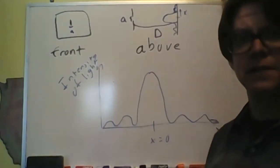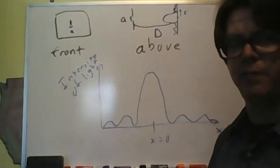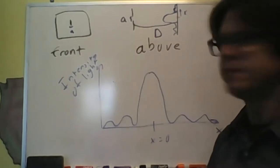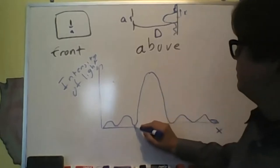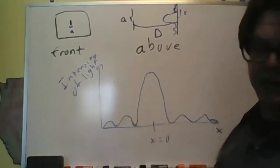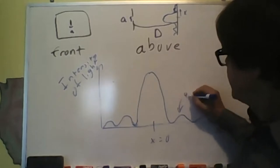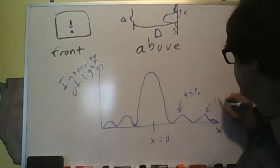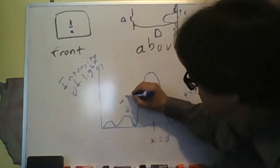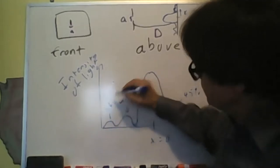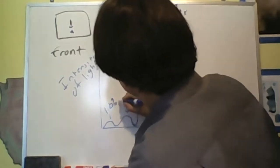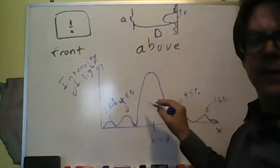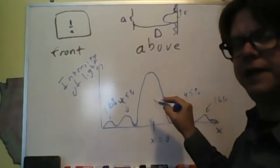I'm going to use the variable x to indicate position on the screen, going farther below the spot directly opposite the slit. We see that it is very bright in the middle, and then it goes to a minimum, and then much dimmer side lobes. In fact, each side lobe has only about 4.5% of the total light.